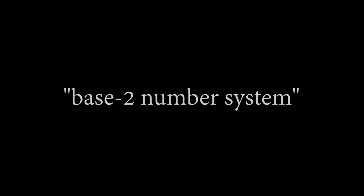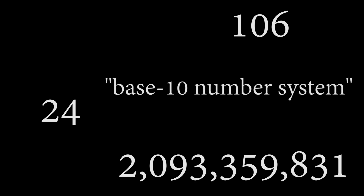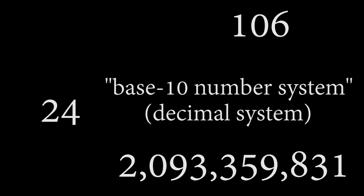First, let's review binary. The binary number system is a base-two number system in which the values of numbers are displayed with only two symbols: zeros and ones. A lot of people get scared at this point — how can numbers like 1, 3, 24, 106, and 2,093,359,831 be displayed with only two numbers? All you have to do is think of it like this: the way you thought of those numbers was in a base-10 number system, more commonly called the decimal system.